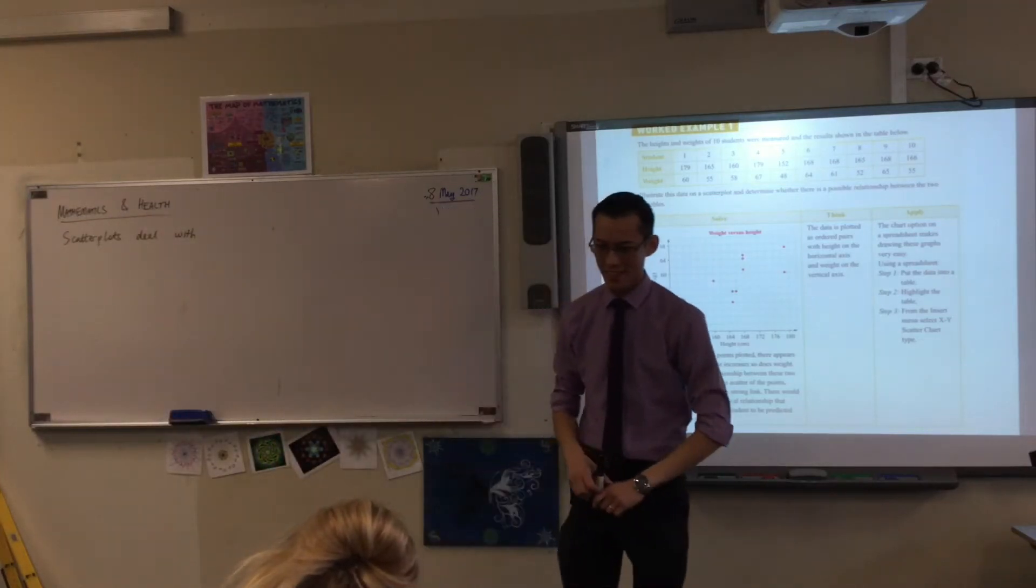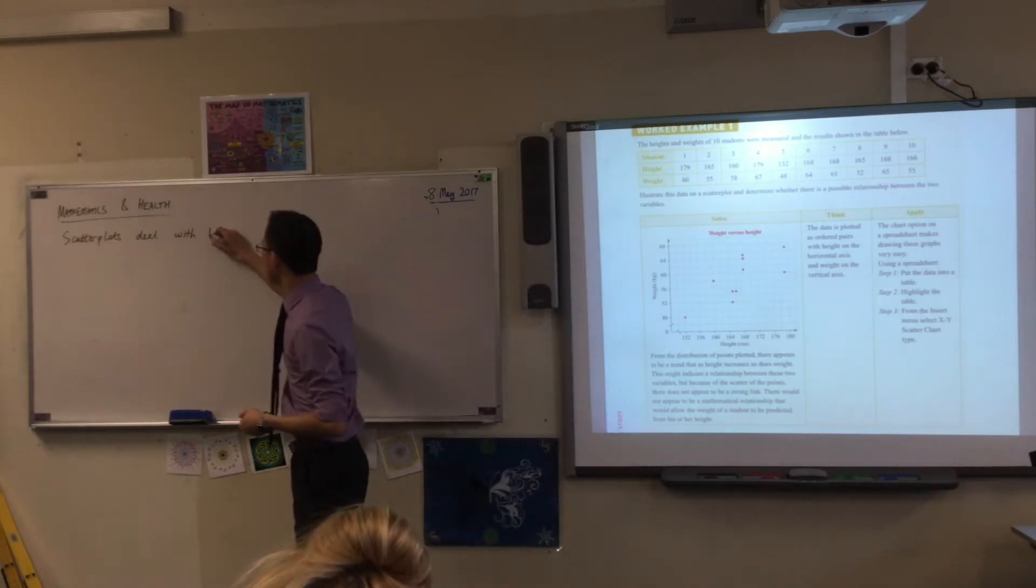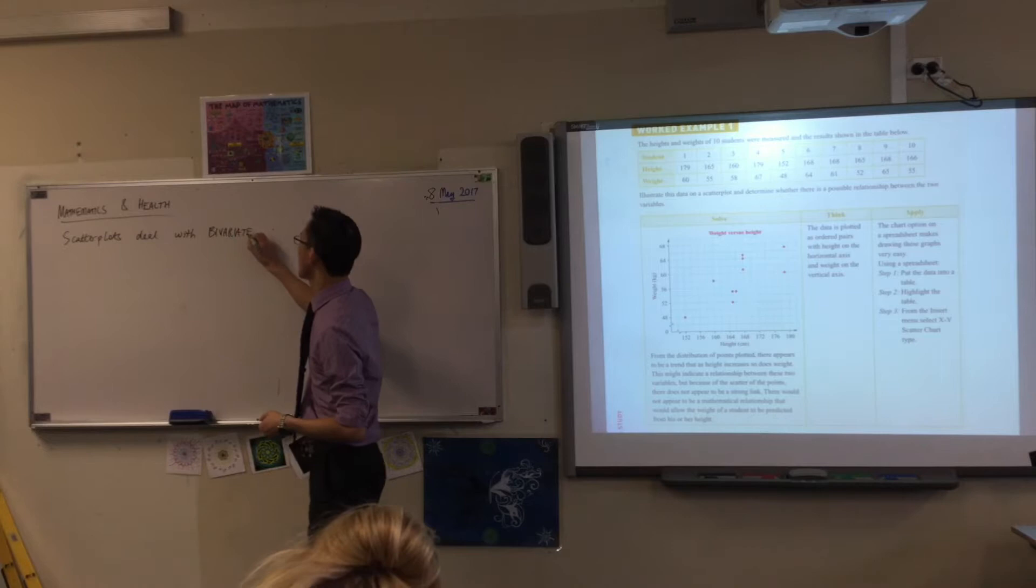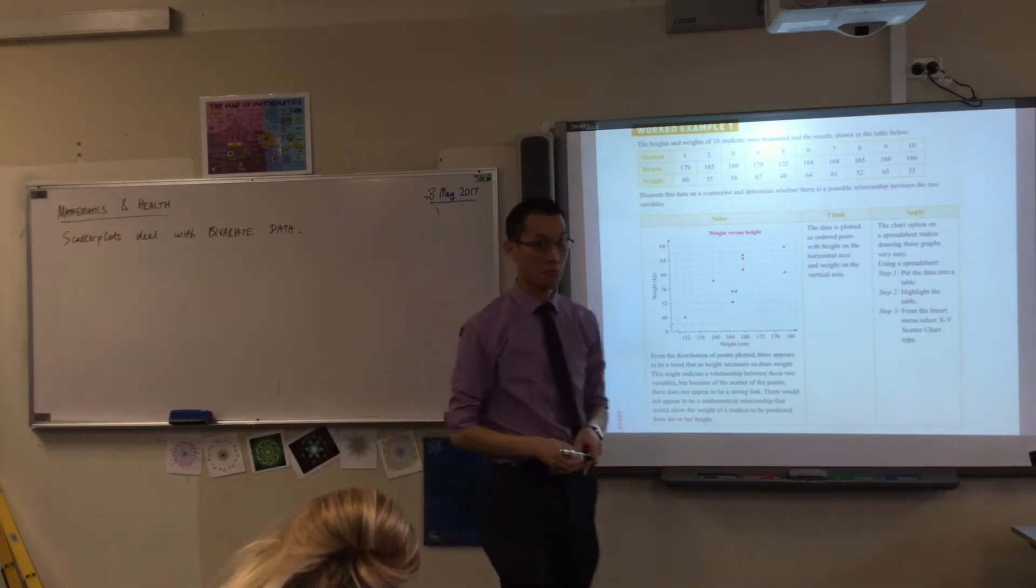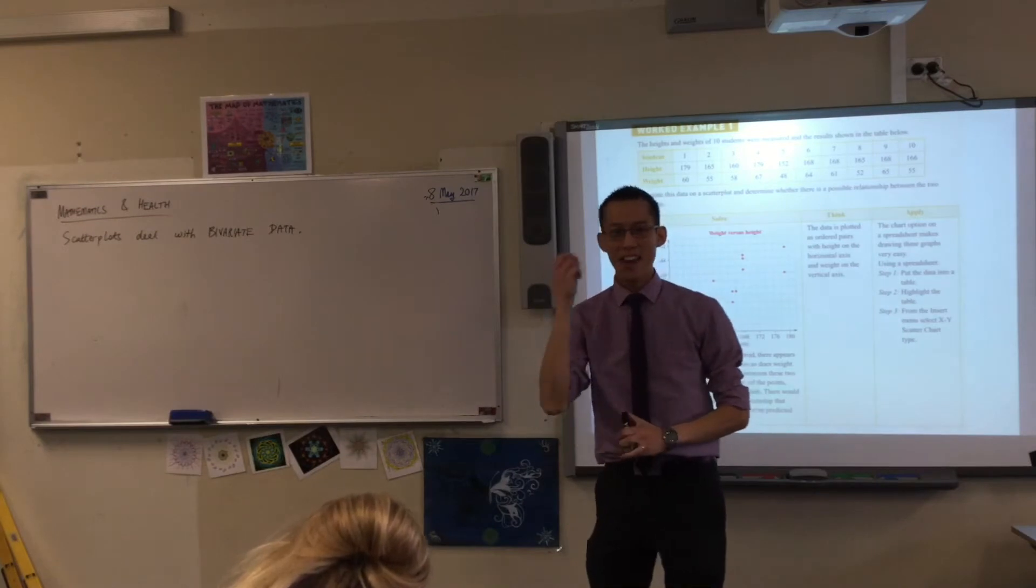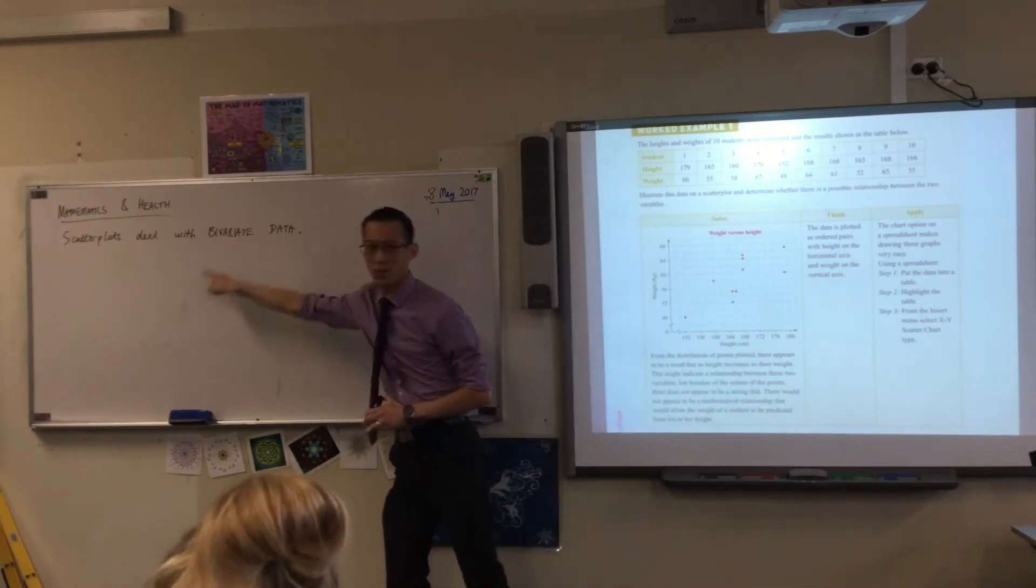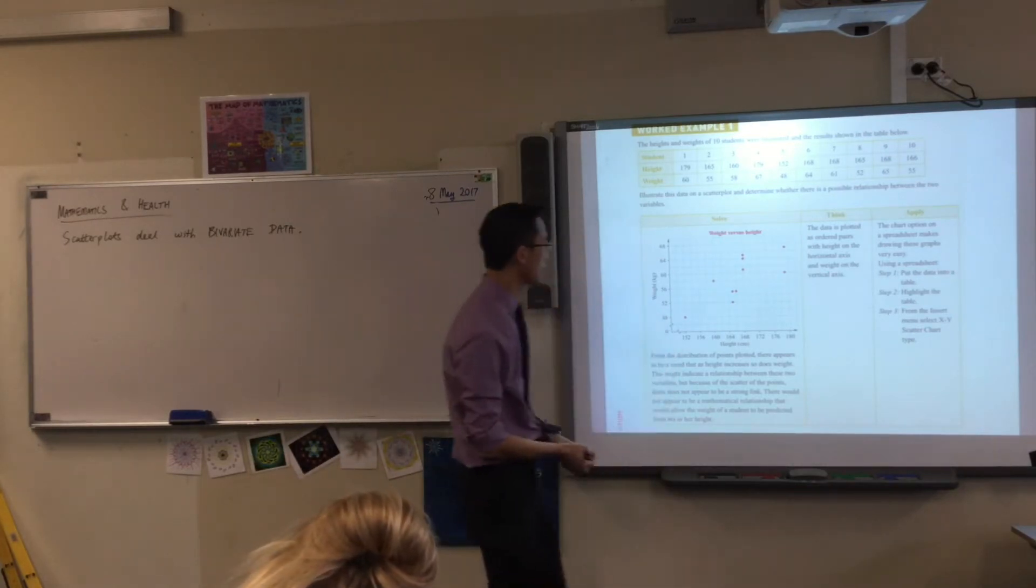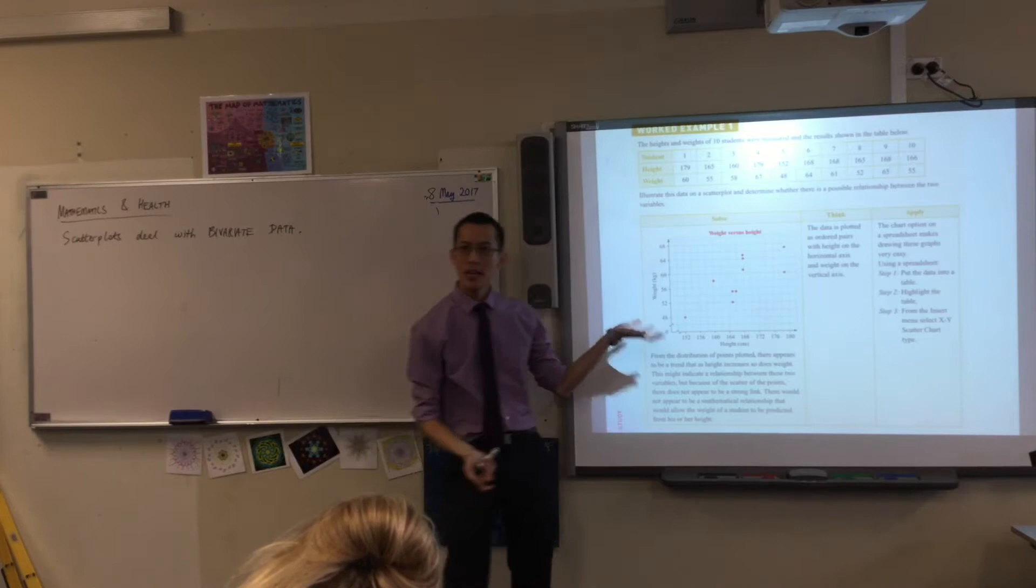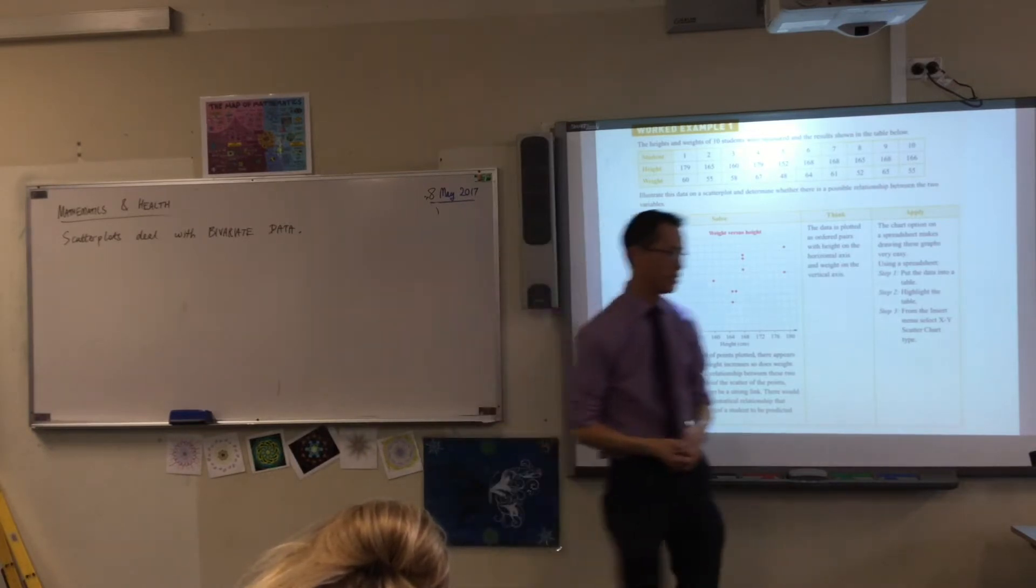Scatterplots deal with something you've seen before, I've just never called it. They deal with bivariate data. I want you to have a guess as to what you think bivariate means. There's data which has two variable quantities in it. So have a look at this one for instance. This is bivariate data. There are two parts to it. Have a look at the axes. Can you see them?